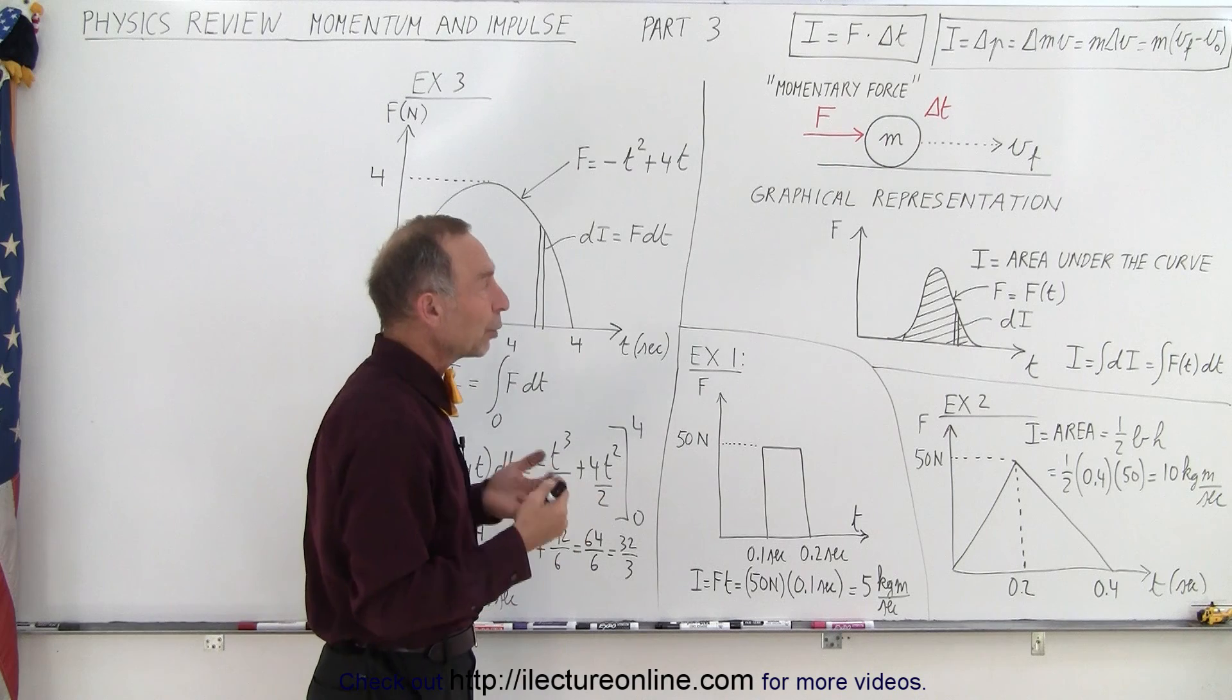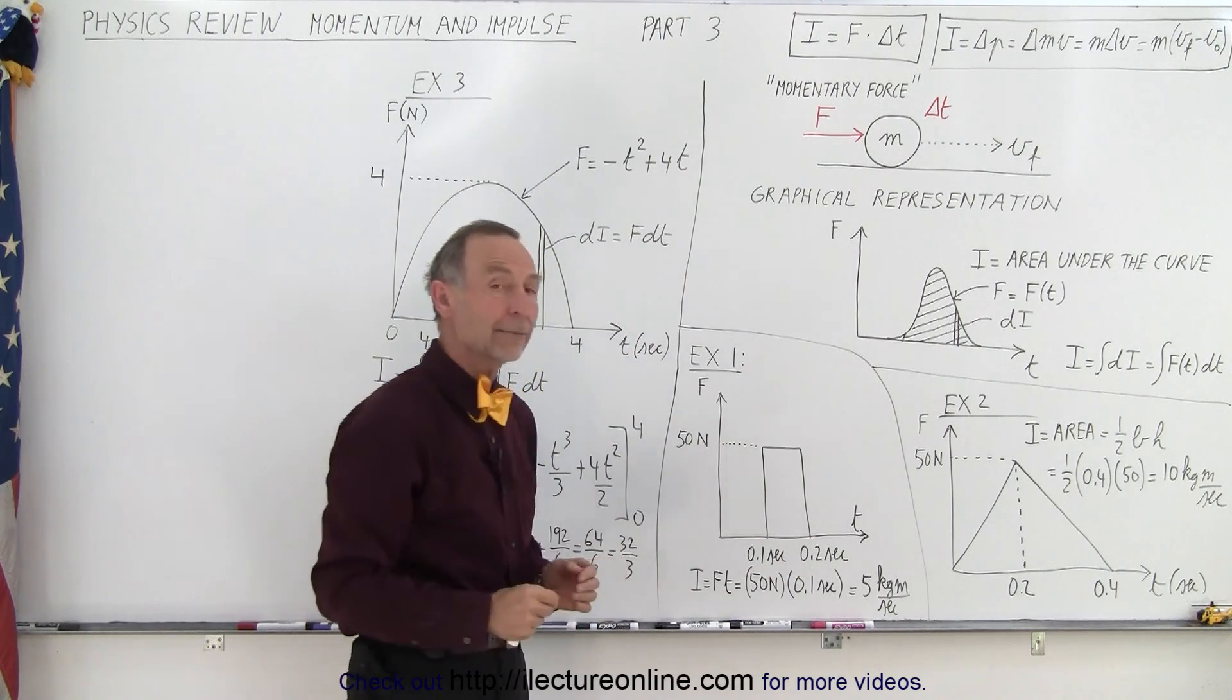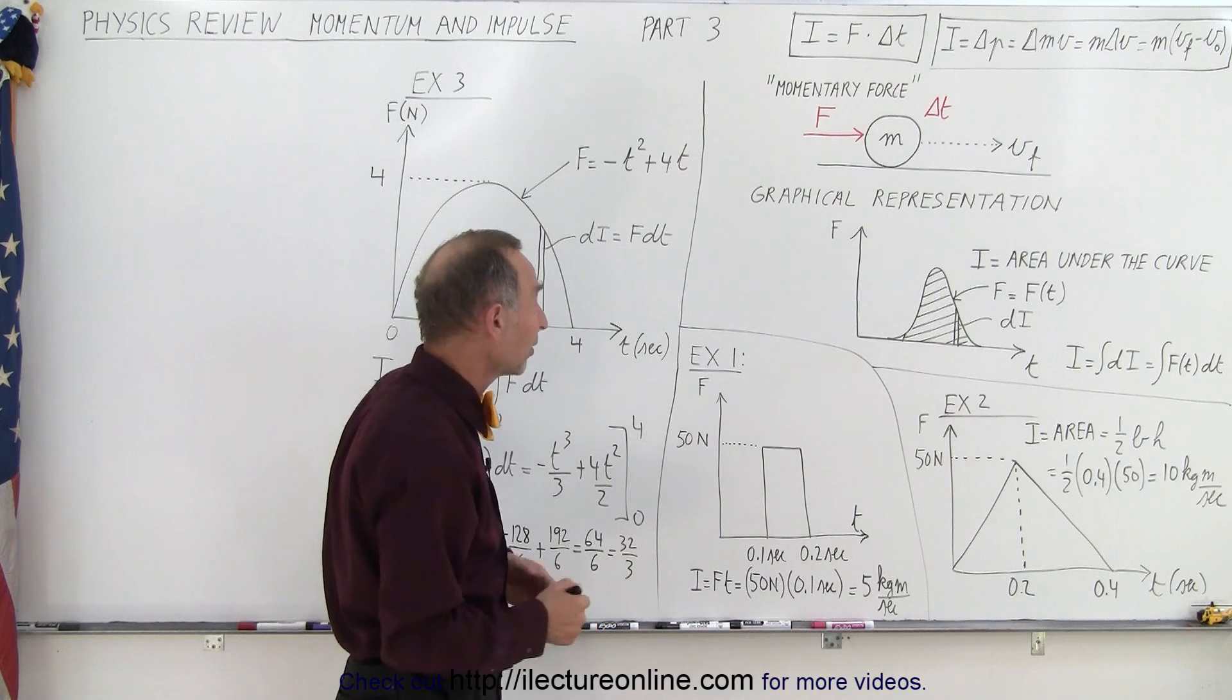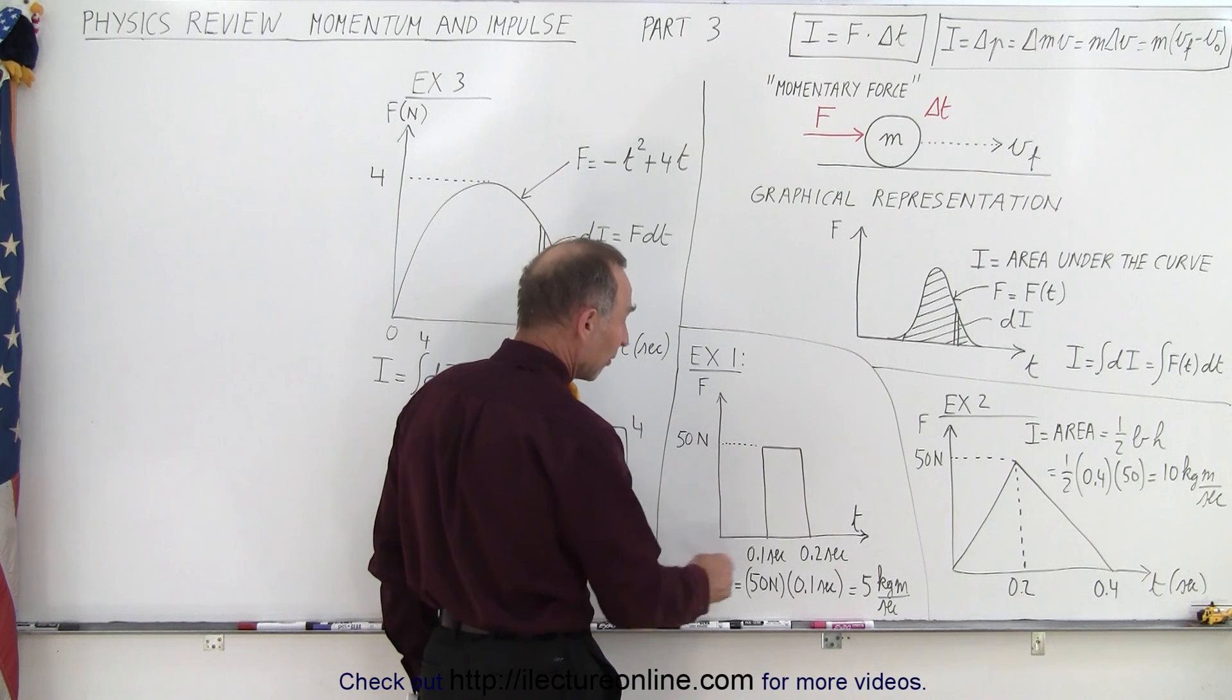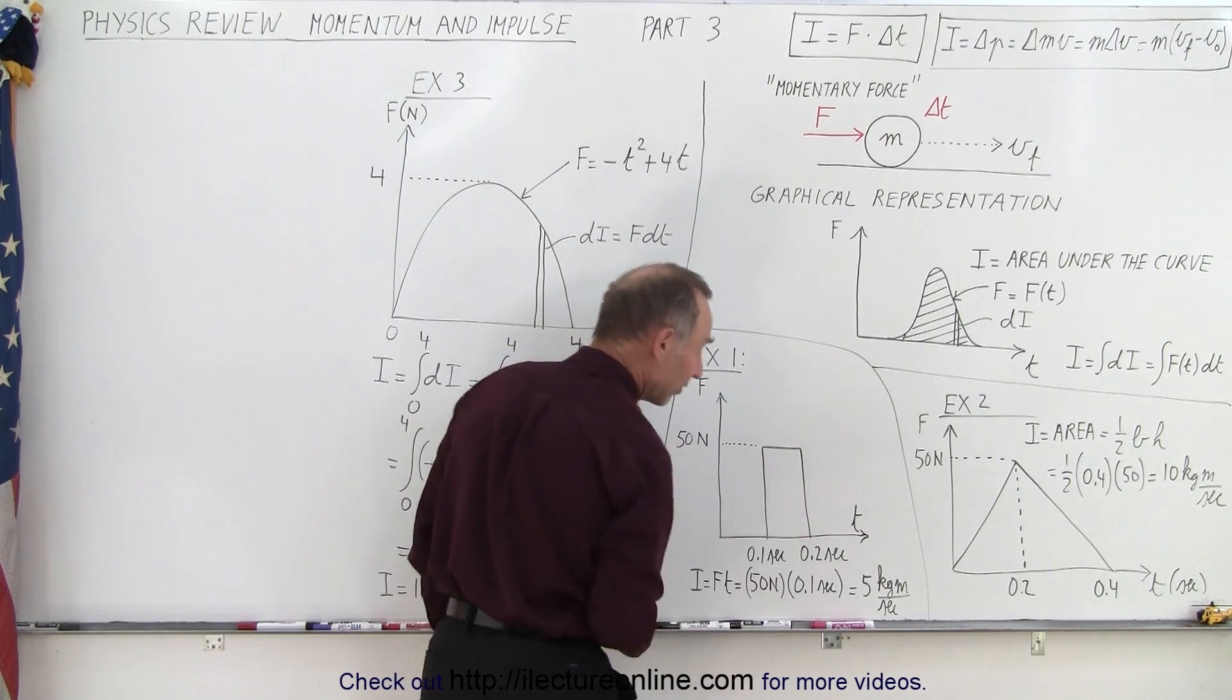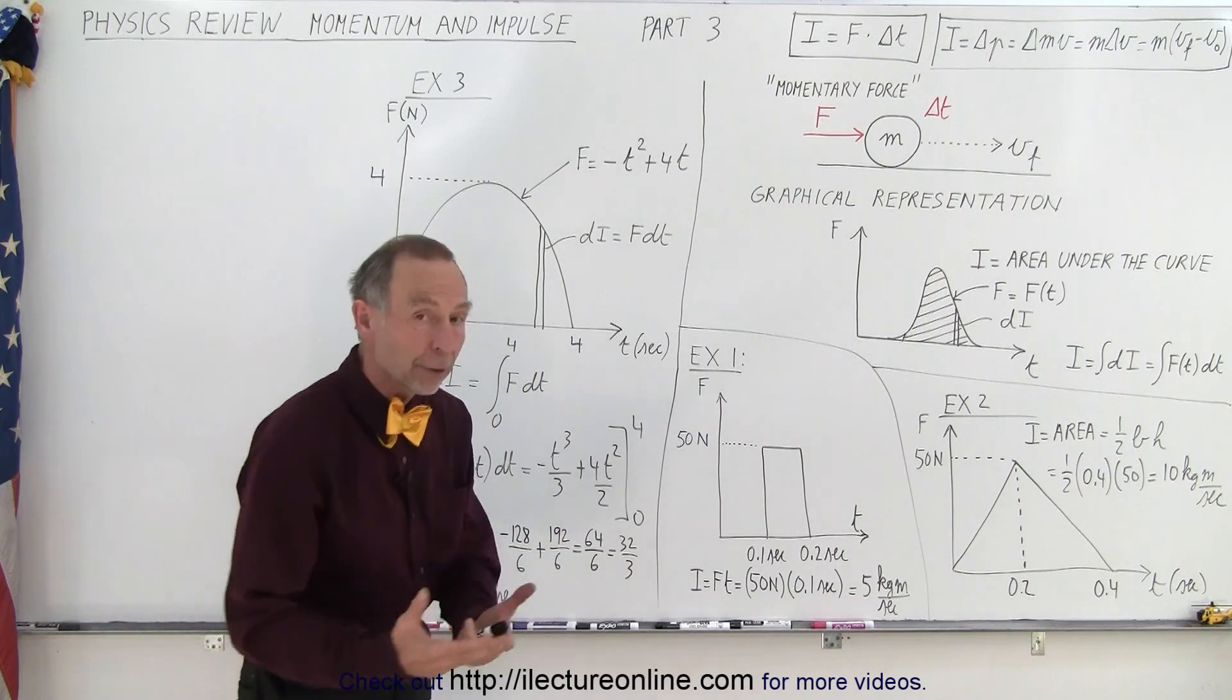But quite often they will represent the force as a momentary force acting on a constant basis over a small amount of time. So that's called the average force. And so therefore we can say that if we're trying to calculate the momentum of an example like this, where a 50 Newton force is applied from 0.1 seconds to 0.2 seconds, so that the delta t is 0.1 seconds, we simply multiply the force times the time to get the change in momentum or to get the impulse.